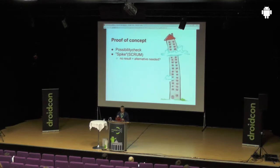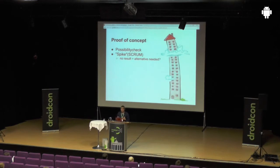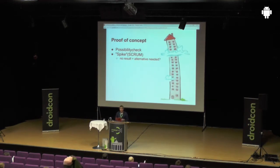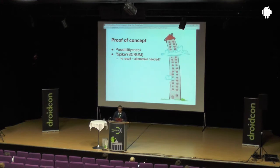Especially in Scrum, you have to spike for that. It's like a given time box — say five days to check whether what you want to develop is possible with Android. If you don't get an answer within that, you maybe should think about an alternative. It's really about having confidence that everything is possible so you won't get horrible nightmares at the end of your development.